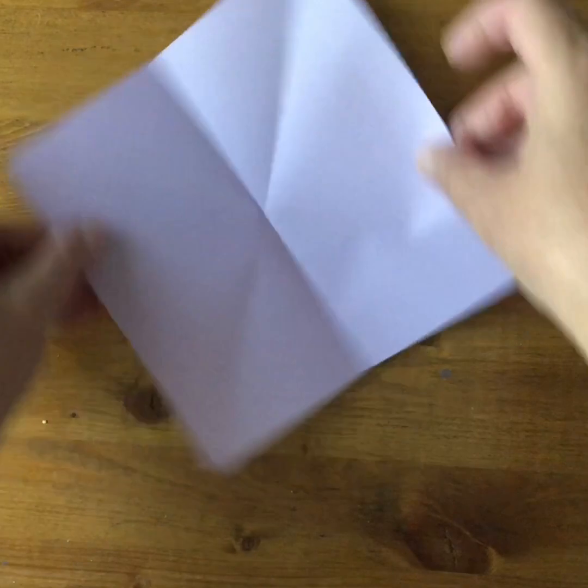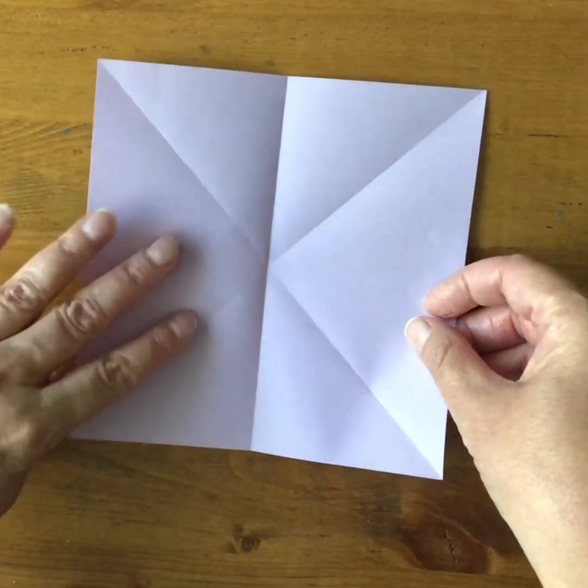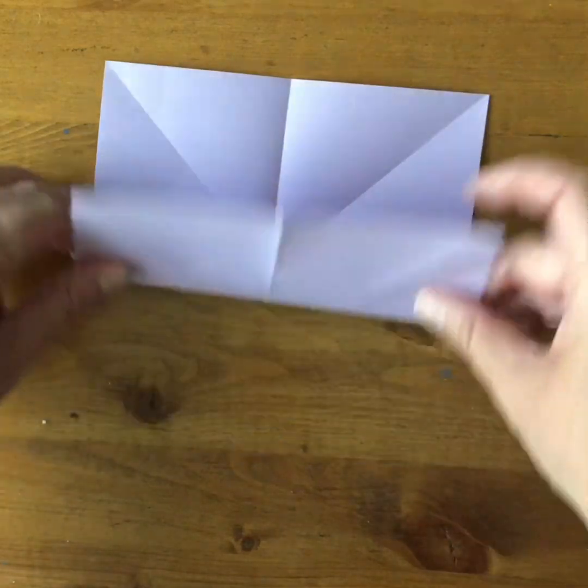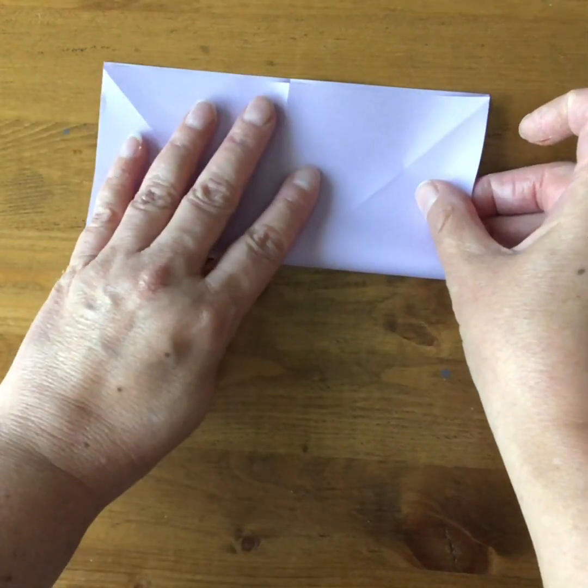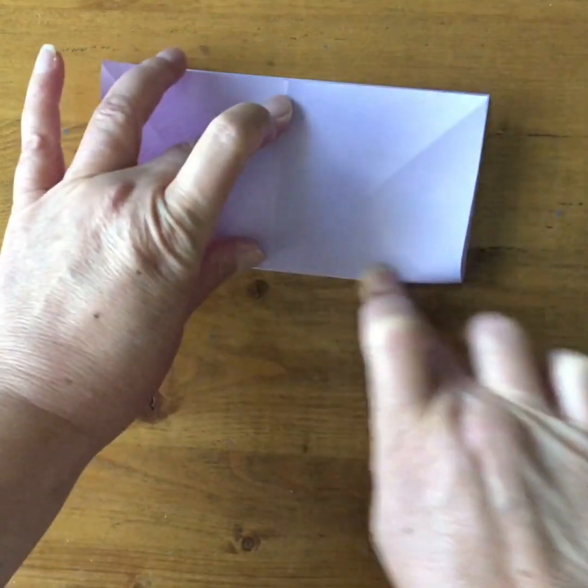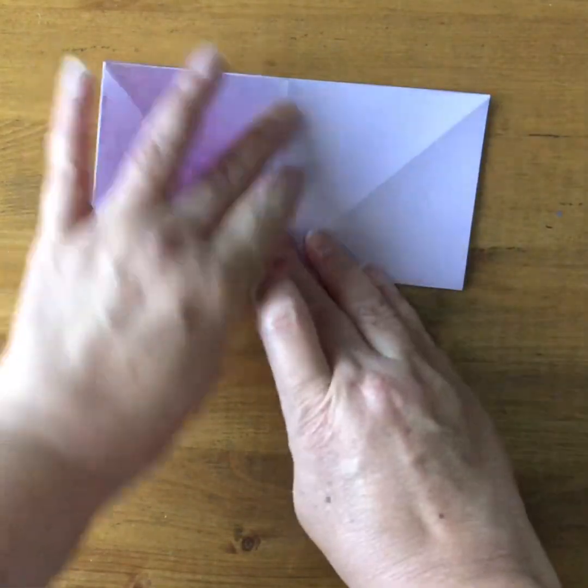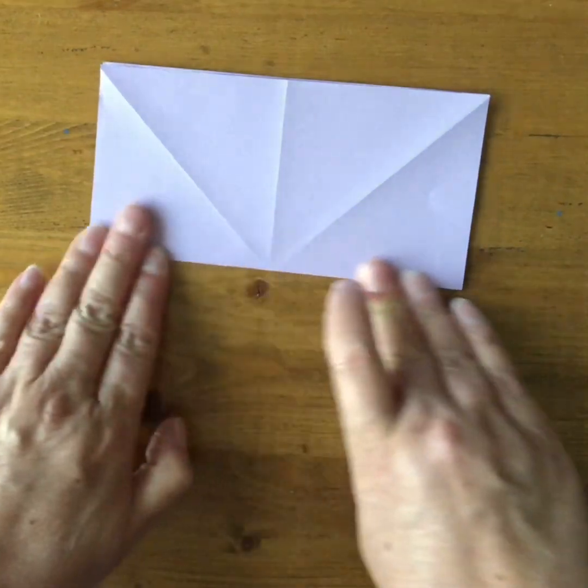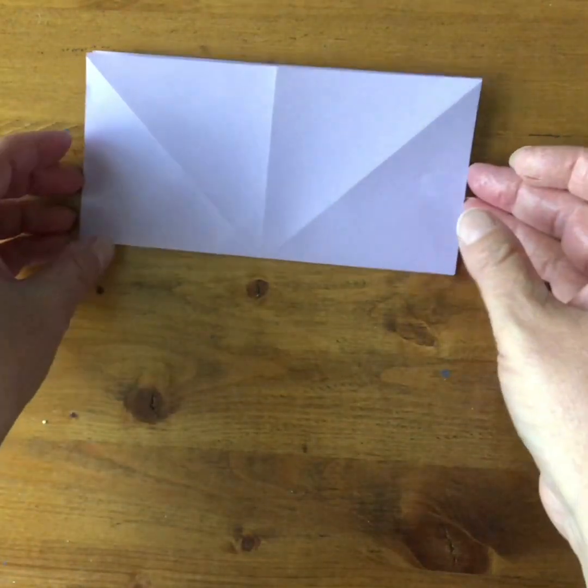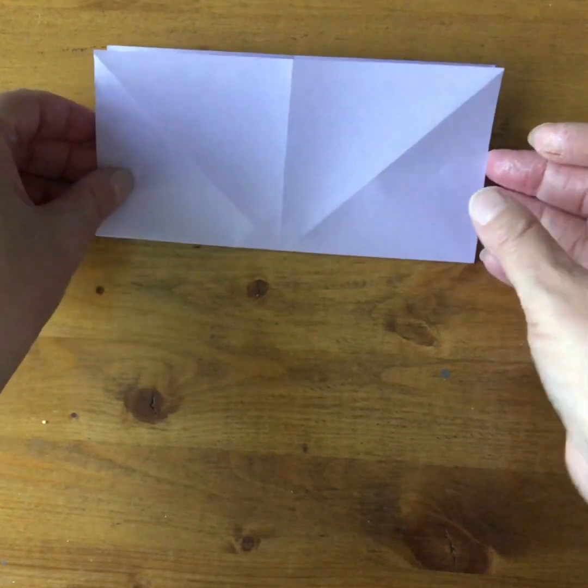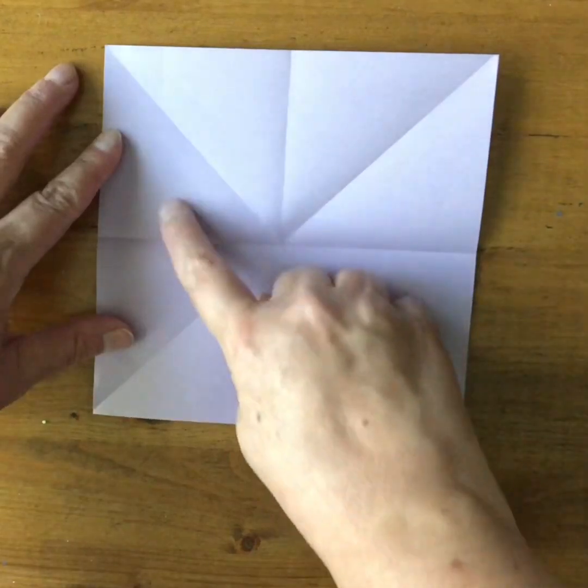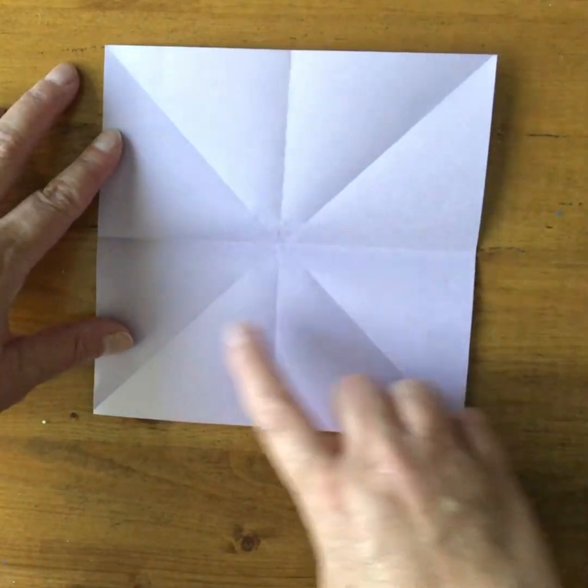Now we're going to turn it one turn to the right and we're going to do another rectangular fold. From the bottom up, match the corners and then crease the bottom. Before I open it up again, try and visualize how many triangles we're going to see when we open it up. One, two, three, four, five, six, seven, eight.